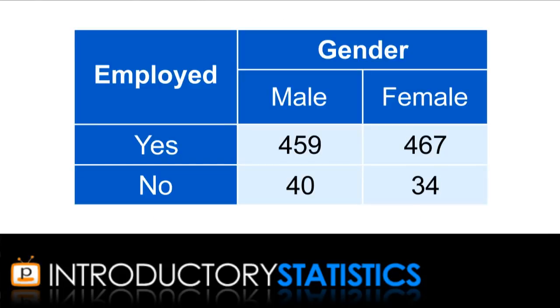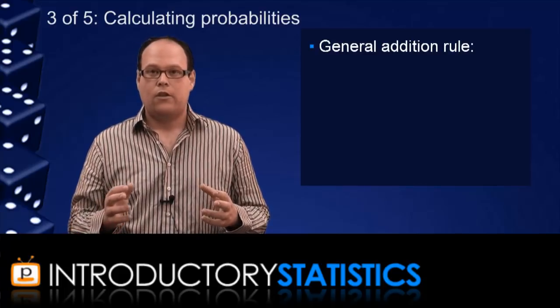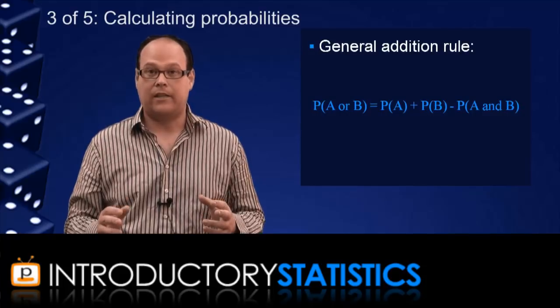What about the probability that a random person is male or employed? This is a fairly important example. Notice that you can't just count up all the males, there's 499 of those, and then count up all the employed people, there's 926 of those, and add them together. If you did that, you'd be counting all the people who are both male and employed, you'd be counting them twice. So you have to subtract that from your calculation. And this gives us what is called the general addition rule. To calculate the probability that A or B occur, you add together the individual probabilities, but then you have to subtract the probability that they both occur.